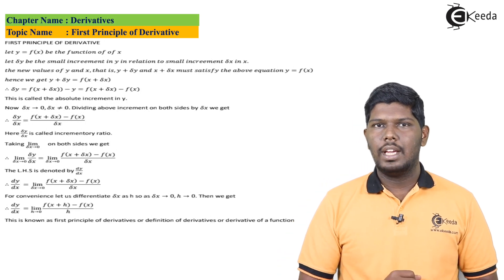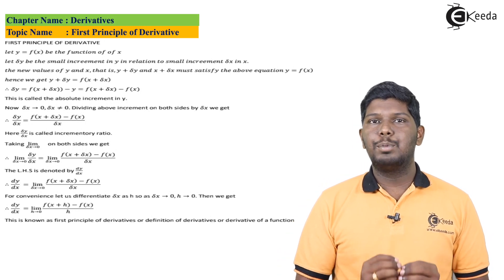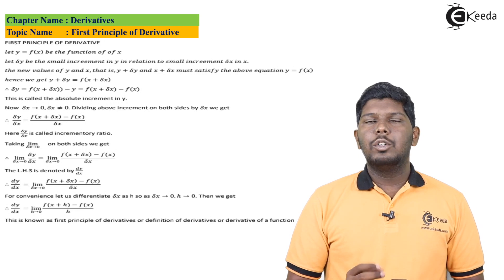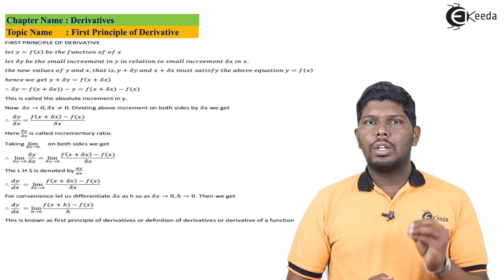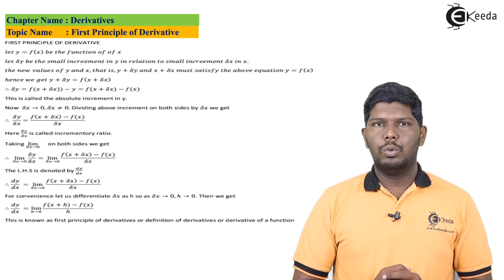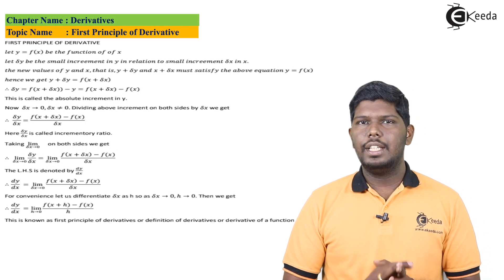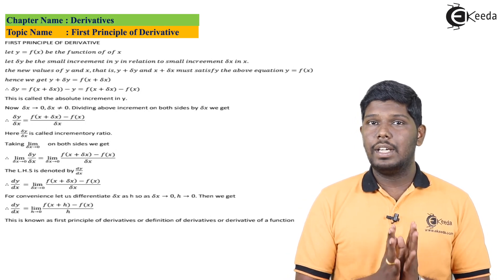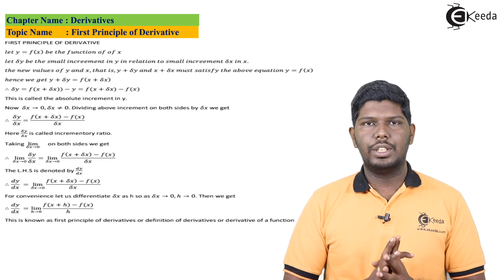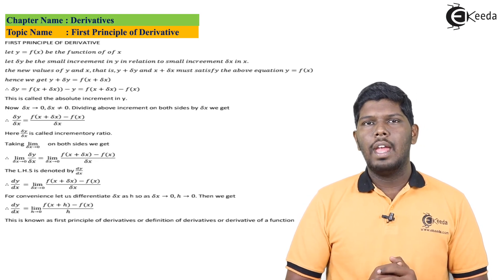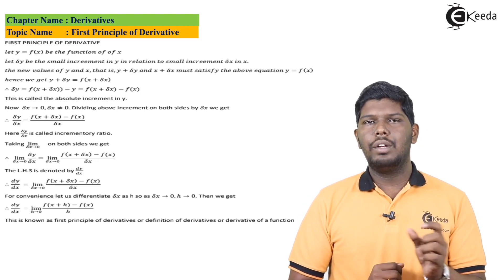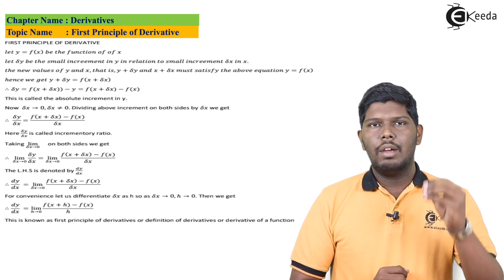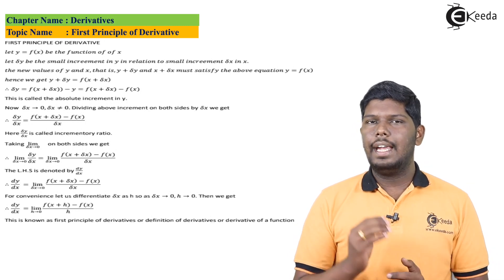Now suppose this del x or the change in x is tending to 0. The change is very small, it is close to 0 but not 0. We are specifically mentioning that this change is not 0, it is close to 0. And we are going to divide these two different types of increments: we'll take del y in the numerator and del x in the denominator.